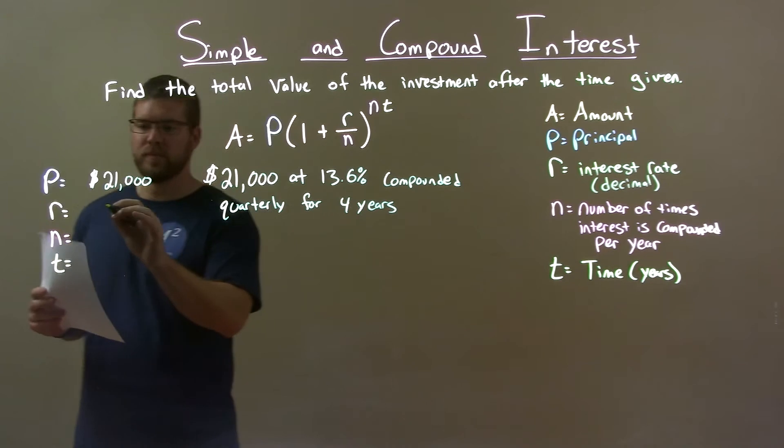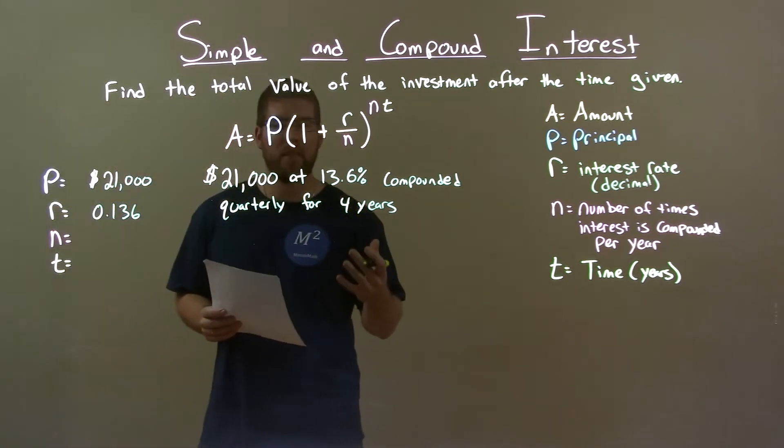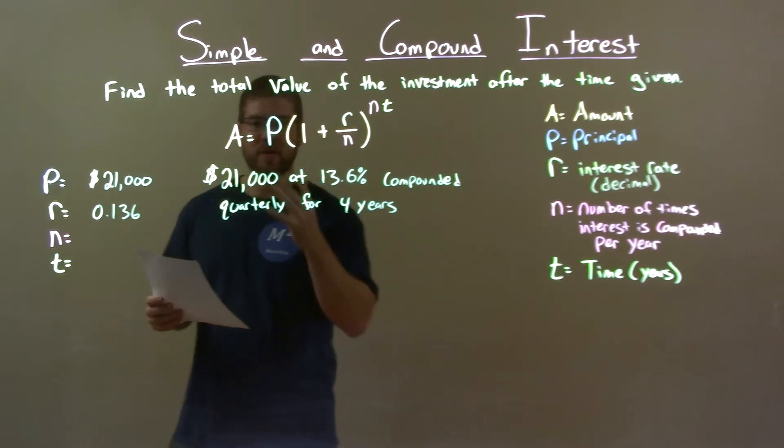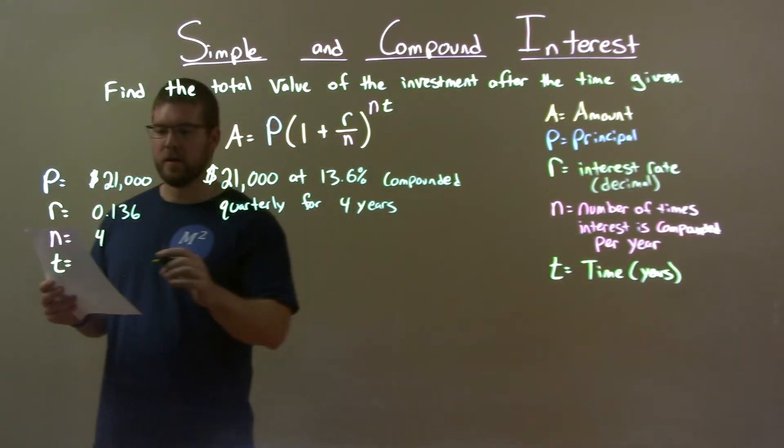Interest rate as a decimal, 0.136. Number of times we compound within a year - quarterly means four times in a year. And the number of years we're compounding here is four.